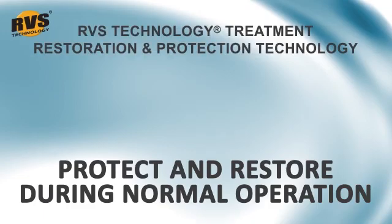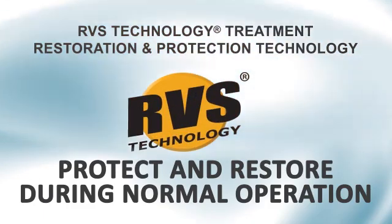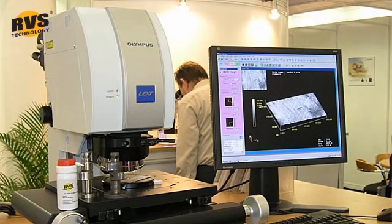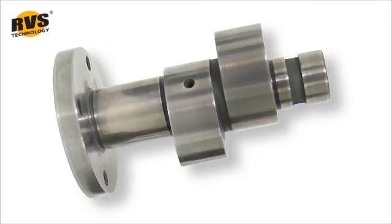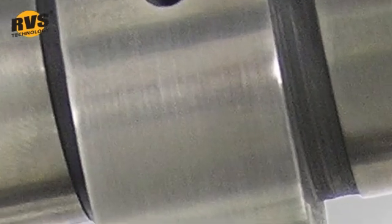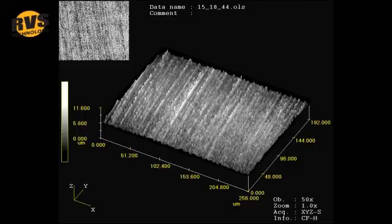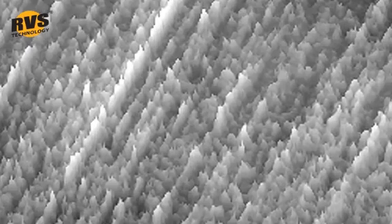The RVS technology compound resolves this problem in an entirely new manner. Closer examination of gear wheels, bearings or cylinder surfaces opens up a whole new world. What seems to be a smooth steel surface is a mountain range with peaks and deep valleys.